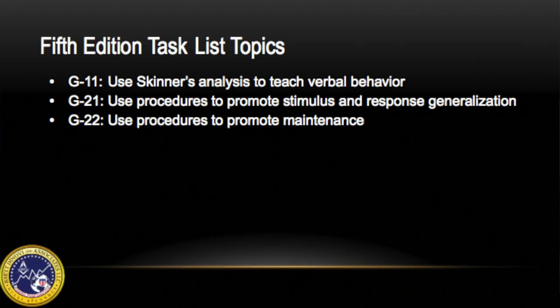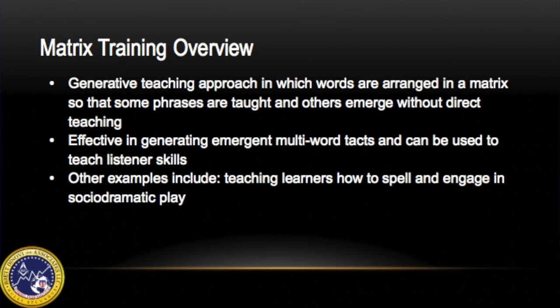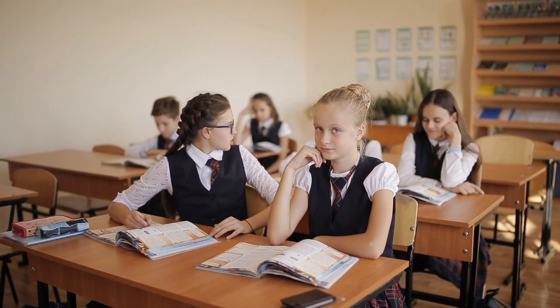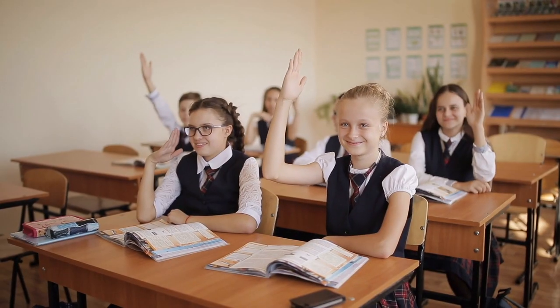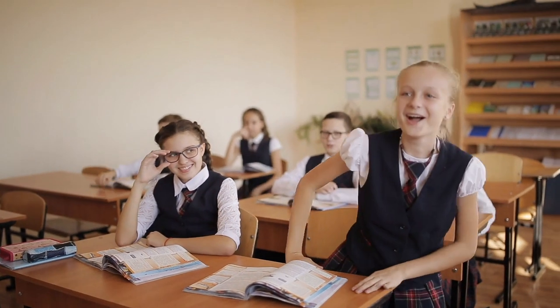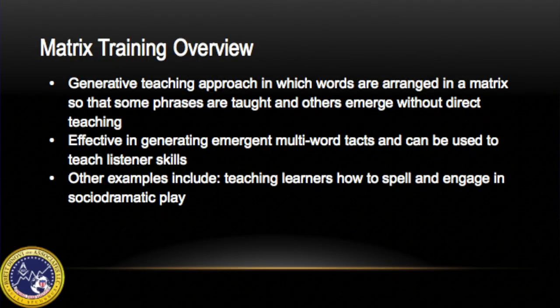This video will cover 5th edition task list topics G11 and G21. Matrix training is a generative teaching approach in which words are arranged in a matrix so that some phrases are taught and others emerge without direct teaching. Research has shown matrix training to be effective in generating emergent multi-word utterances and can be used to teach listener skills. Other examples include teaching learners how to spell and engage in sociodramatic play. Matrix training can be used to teach more than just verbal behavior, but for the purpose of this video we will be mainly focusing on language.